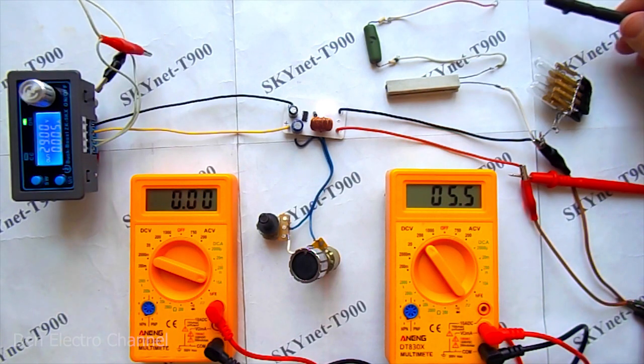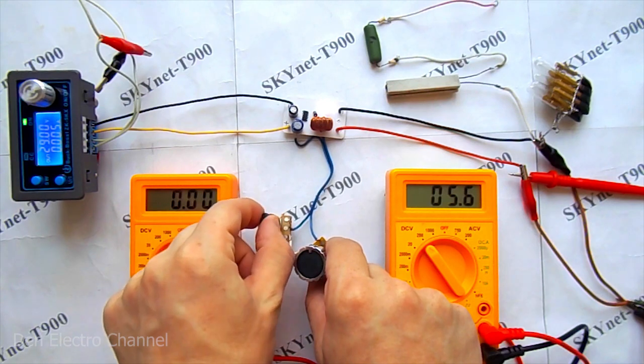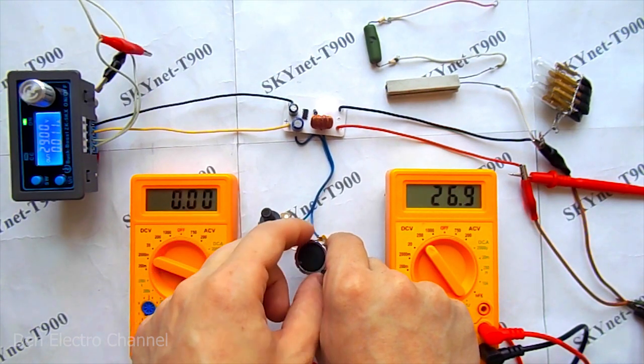At the input, as in the previous test, I applied 29 volts. The output turned out to be 5.6 volts. If you unscrew the regulator to the maximum, then the output will be almost 28 volts.